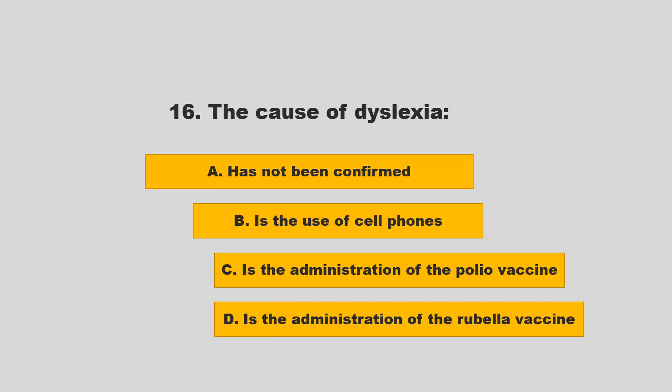The cause of dyslexia: A) has not been confirmed; B) is the use of cell phones; C) is the administration of the polio vaccine; D) is the administration of the rubella vaccine. If you chose A — has not been confirmed — you are correct.